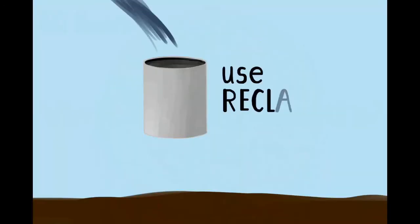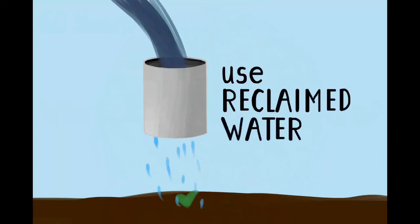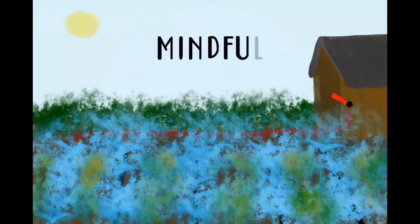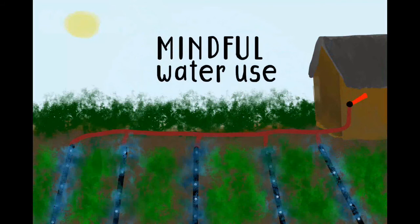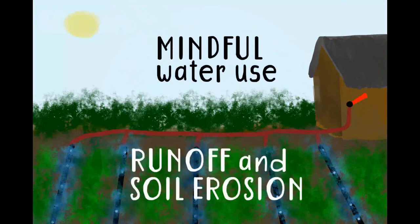We can use reclaimed water for agricultural purposes. Finding new ways to reuse contaminated water can help the Earth's clean water supply last longer. Mindful water use can also help retain soil quality, prevent soil from compacting too much and becoming stiff, which would cause increased runoff and soil erosion.